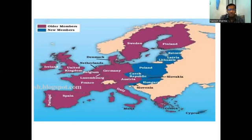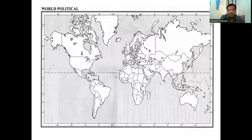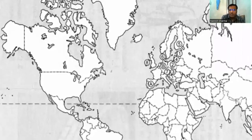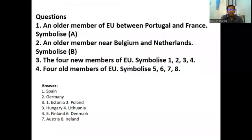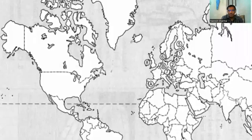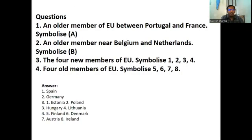So what type of questions are discussed in this board examination? The first question: see the map — you will see symbols 1, 2, 3, 4, 5, 6, 7, 8 and A and B. The first question is that an older member of the European Union located between Portugal and France is symbol A. The second question is an older member near Belgium and Netherlands is symbol B. So the answers are Spain and Germany.